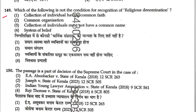Question 149: Which is not a condition for recognition of a religious denomination? A collection of individuals having a common faith — yes, required. Common organization — yes, required. Collection of individuals must not have a common name — wrong, they can have a common name. System of belief — yes, required. So option 3 (must not have a common name) is not a condition. Answer is 3.